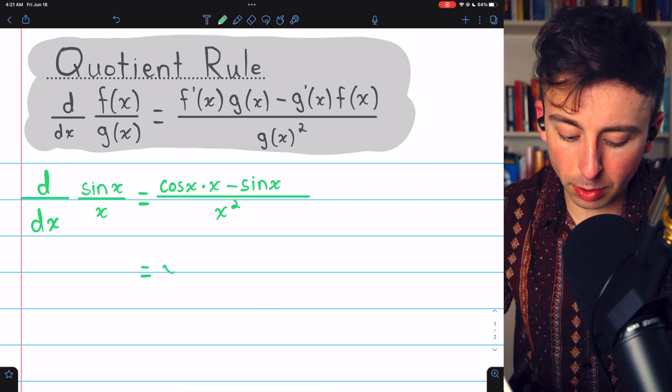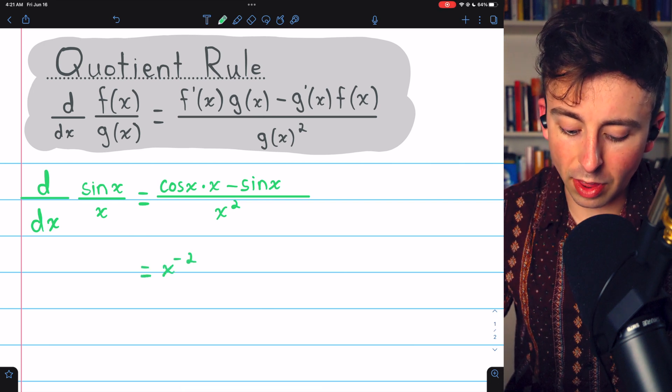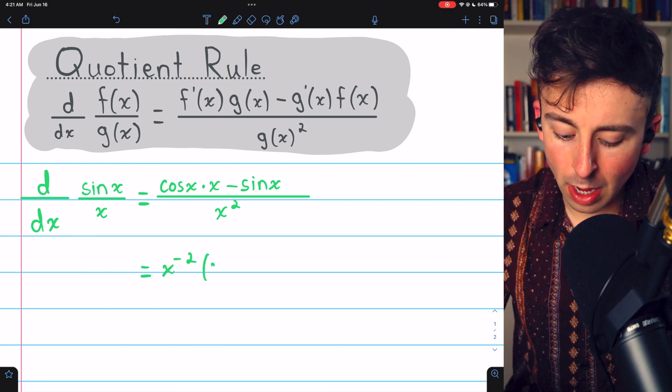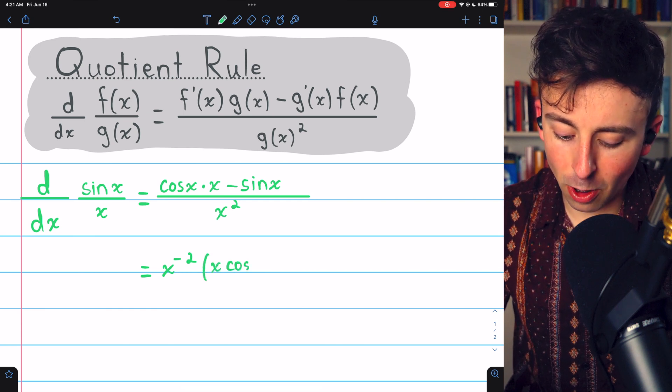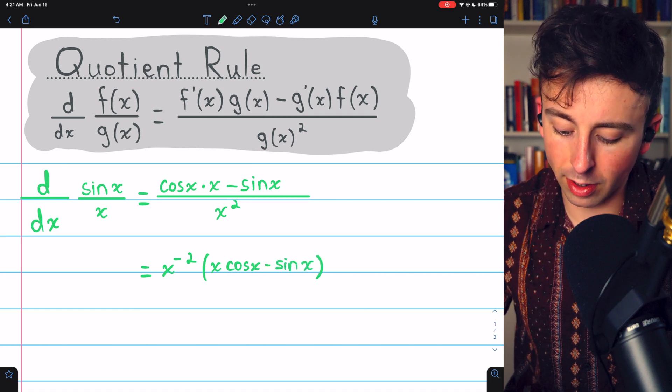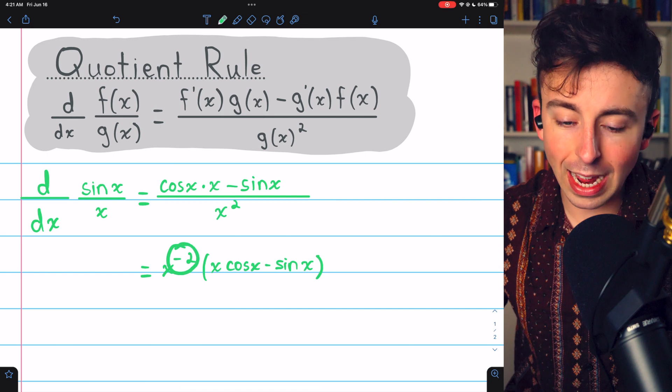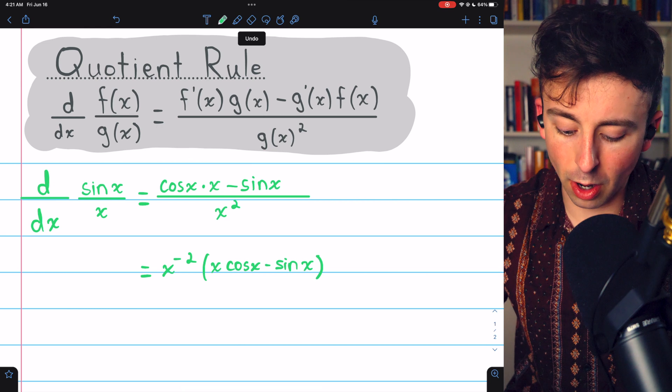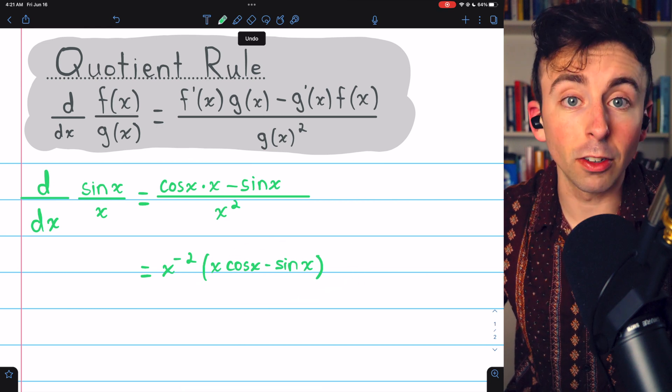There's not really much we could do to simplify it. If we wanted to write it without the fraction bar, we could write it as x to the negative 2 multiplied by x cosine x minus sine x. Since the x squared in the denominator gets a power of negative 2 if we bring it up top. And then I just moved this x to the front of the cosine because I think that looks better.